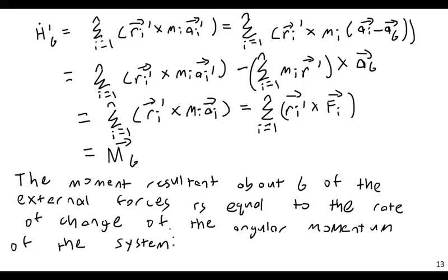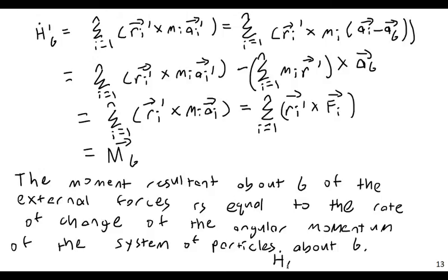So if I look at where I start and where I end: H dot G prime equals the summation of M_G — the summation of the moments applied, basically the forces on each individual particle transformed to moments about the center of mass of the system.